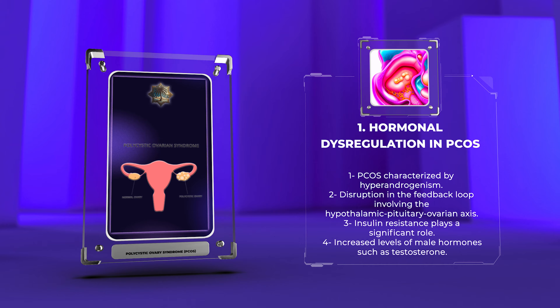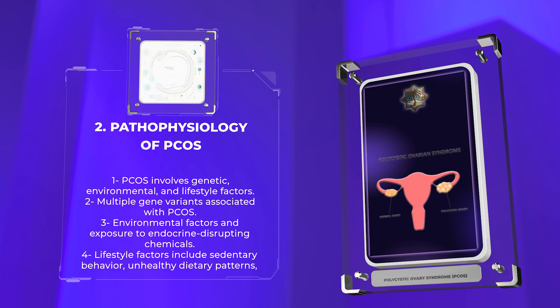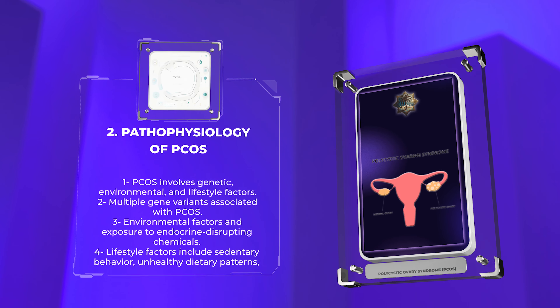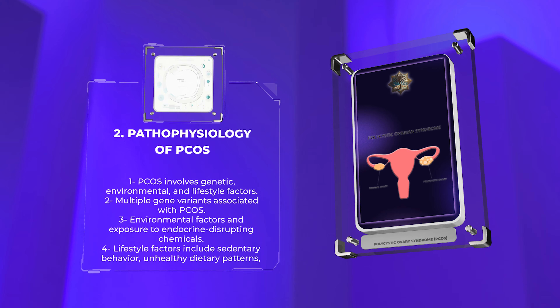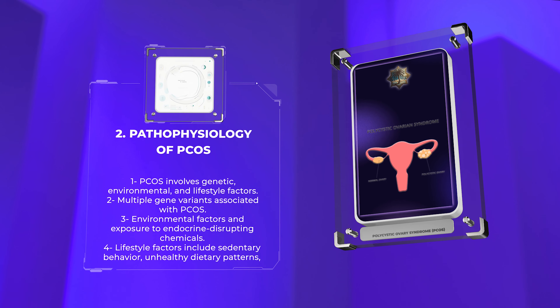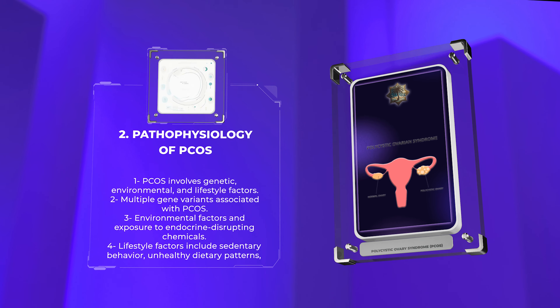Pathophysiology of PCOS: The pathophysiology of PCOS involves a complex interplay of genetic, environmental, and lifestyle factors. Genetic predisposition is believed to play a significant role, with multiple gene variants identified to have associations with PCOS. Environmental factors, such as exposure to endocrine-disrupting chemicals, may also contribute to the development of PCOS. Lifestyle factors, including sedentary behavior, unhealthy dietary patterns, and stress, further amplify the manifestations of PCOS.